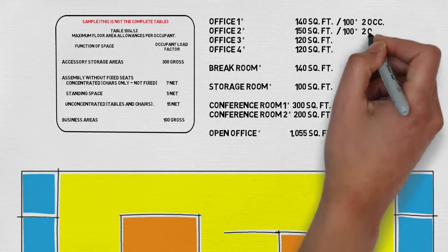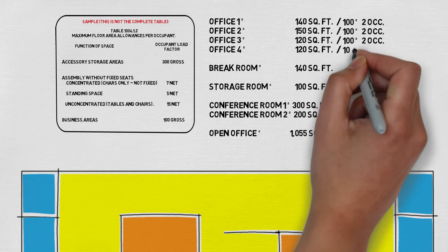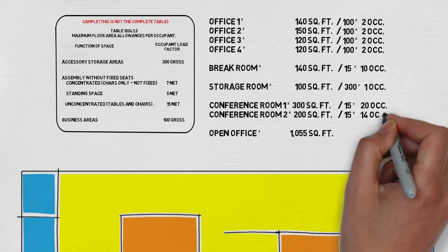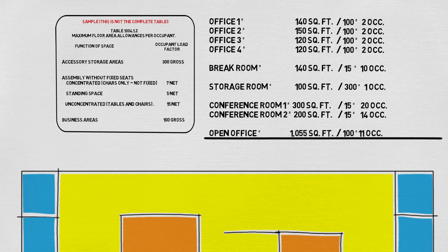Then we have to divide each square footage by the load factor that is on the table. What this will now give you is the total occupants in your suite. Now let's break this down for a minute.